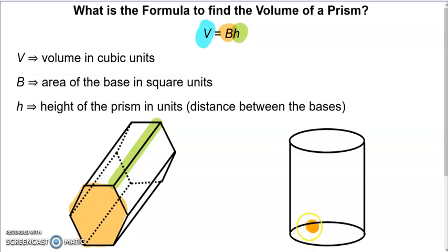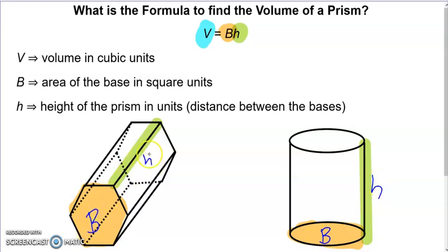If I look at this cylinder, it's the same thing — I find the area of one circle base and multiply it by the height of the prism. In the formula, big B is in orange and little h is in green. Capital letters represent values we calculate, like capital V for volume and capital B for area. Lowercase h is a measurement — I don't figure it out, I measure it.